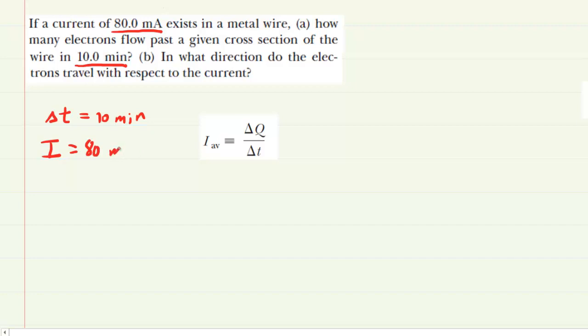Now if we look to the right, we have an equation here that relates the current and the time interval to the amount of charge that passes that cross section. And even though we're not looking for charge per se, it turns out to be helpful that if we calculate the charge, we could then get the number of electrons. So our goal is to solve this equation for delta Q, the amount of charge.